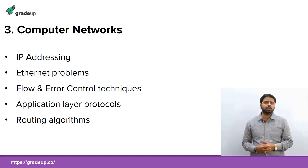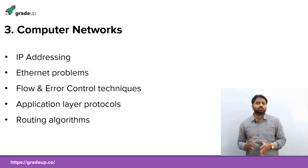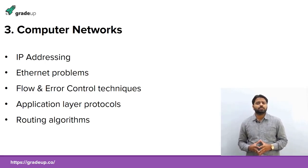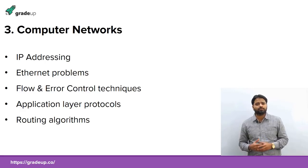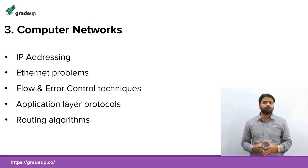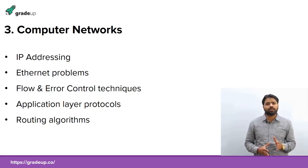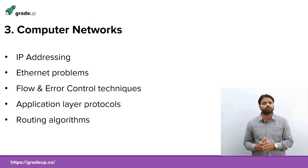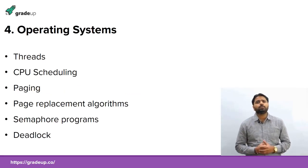Another topic is flow and error control techniques, using sliding window protocols to find the number of packets in transmission. The fourth topic is application layer protocols — one or two questions come from this, covering ICMP, FTP, HTTP, DNS, and other protocols and their applications. The final topic, asked every two years, is routing algorithms. There are only two important types: link state routing algorithm and distance-based routing algorithm.